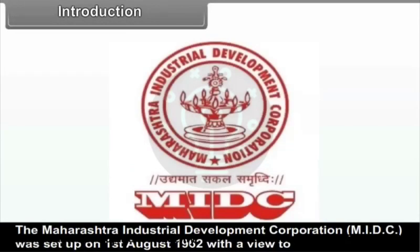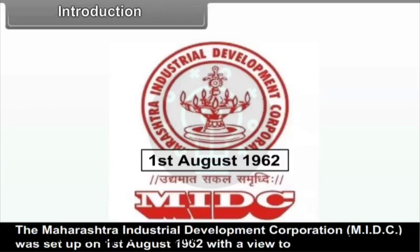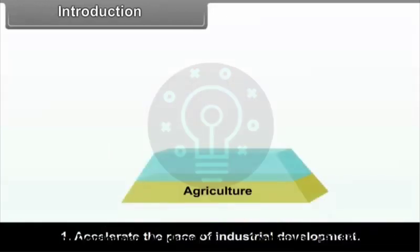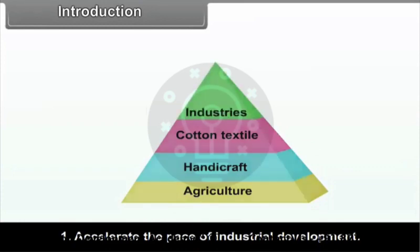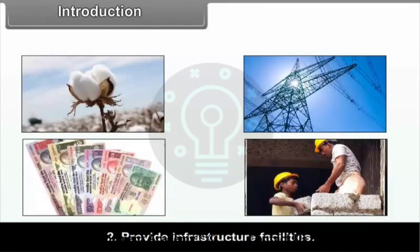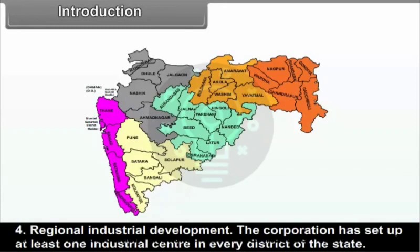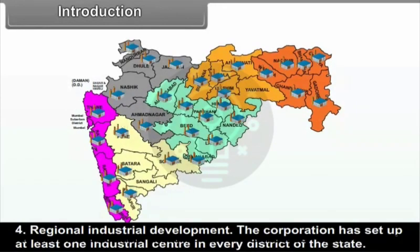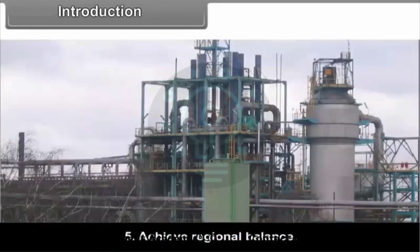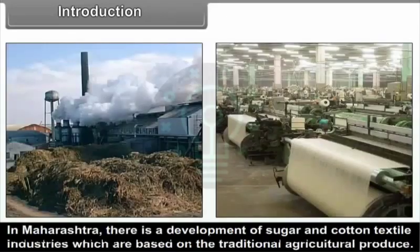The Maharashtra Industrial Development Corporation (MIDC) was set up on 1st August 1962 with a view to accelerate the pace of industrial development, provide infrastructural facilities, and promote industries in underdeveloped regions for regional industrial development. The corporation has set up at least one industrial centre in every district of the state to achieve regional balance.